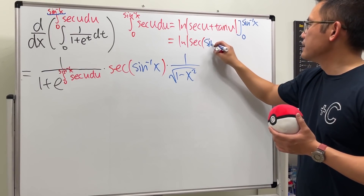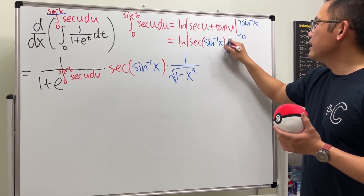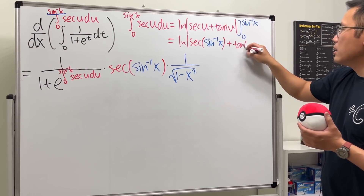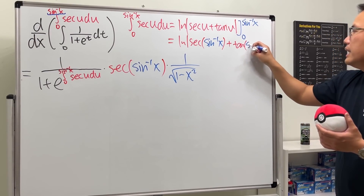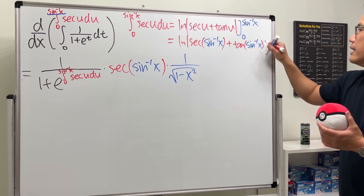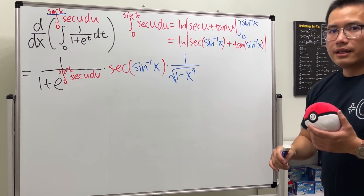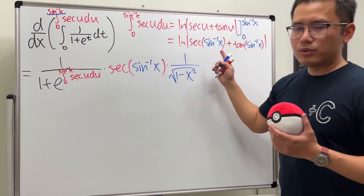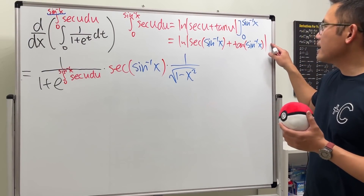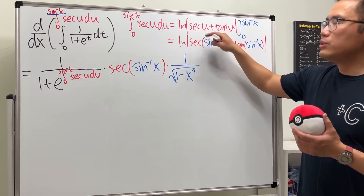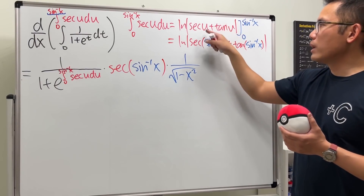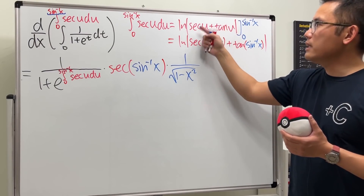Plugging in, we get ln of the absolute value of secant of inverse sine x plus tangent of inverse sine x. Then we subtract the result at zero — secant of zero is 1, tangent of zero is 0, so 0 plus 1 is 1, and ln of 1 is zero. So that all vanishes.